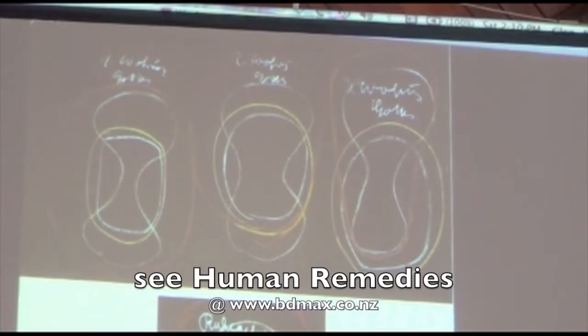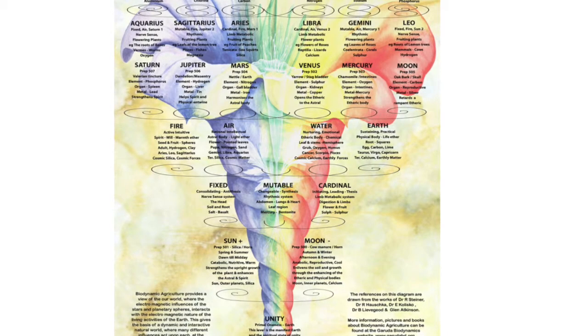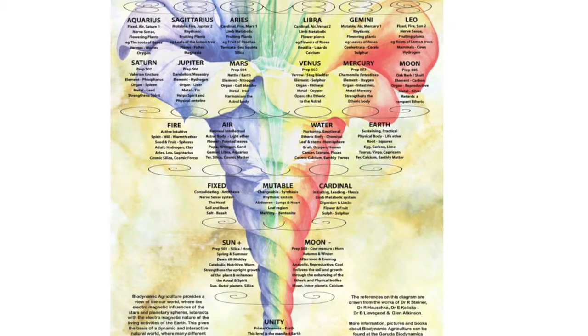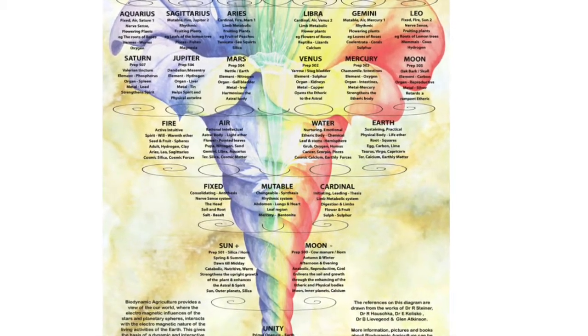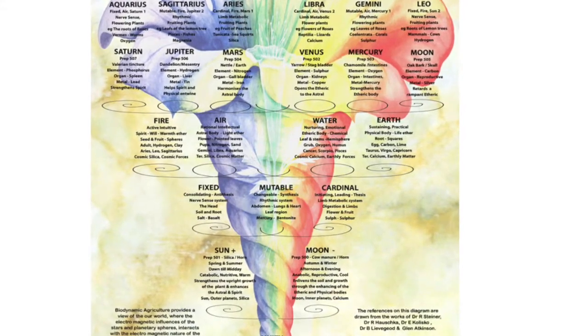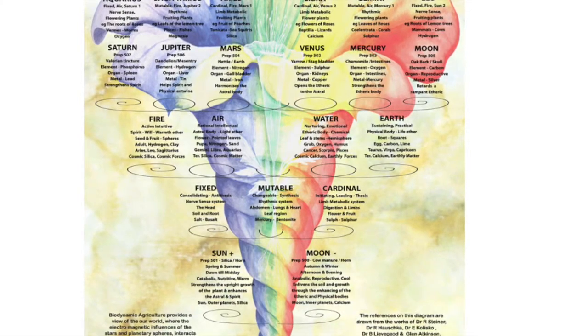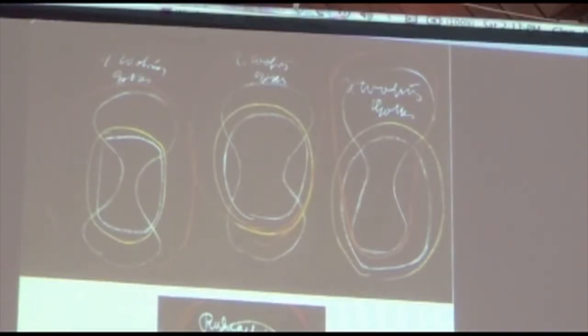Now, one of the big points about the biodynamic preparations is Steiner indicates two of those work on the different energetic body interactions. Leifgood in 1951 indicated another two, and out of that biodynamics decoded chart, I was able to say, well, if that's the case, then these two must work like that as well. So at that point, I was able to start using those preparations to directly influence the energetic bodies.